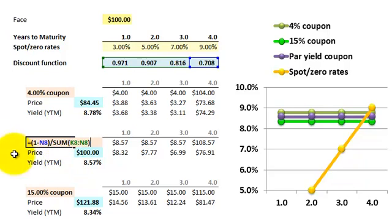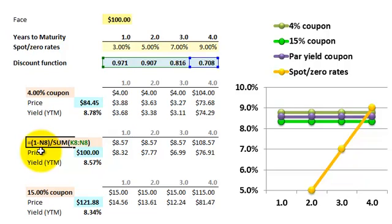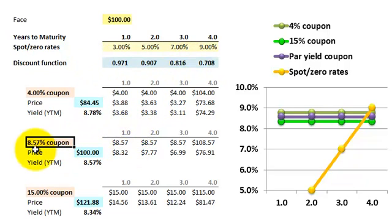There is a formula for the PAR yield. It's 1 minus the final discount factor, divided by the sum of the discount factors. It's not too difficult to derive. There is a formula to compute it directly, but it can also be found iteratively. In this case, the PAR yield comes out to 8.57%.